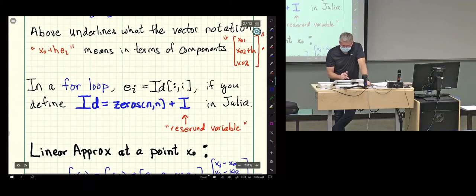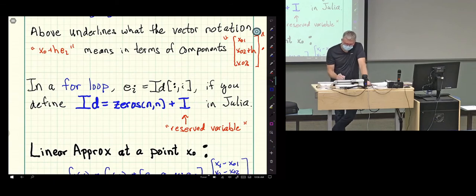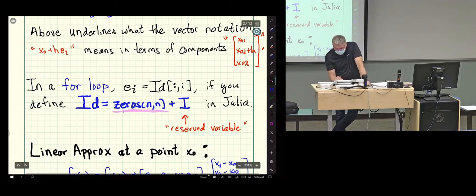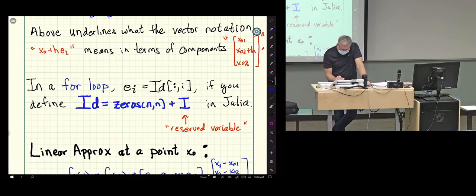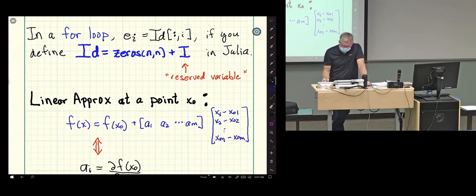In Julia, if you're doing a for loop, and you want to generate these EIs, Julia has a reserved variable called I, capital I. And so you can't call your identity matrix I, you have to call it something else. I always call mine ID for identity. And you just take the zeros, n comma n, and then you add I. You give no variable here, it automatically adjusts I to the size so that the plus sign makes sense. That's how you get the identity matrix in Julia.